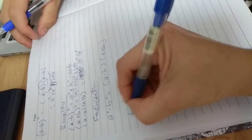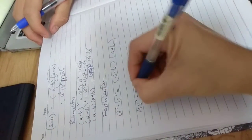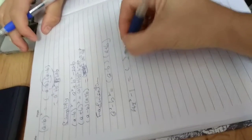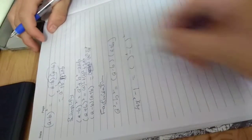So, example, 4x squared minus 1. You can change it to something squared minus something squared, right?